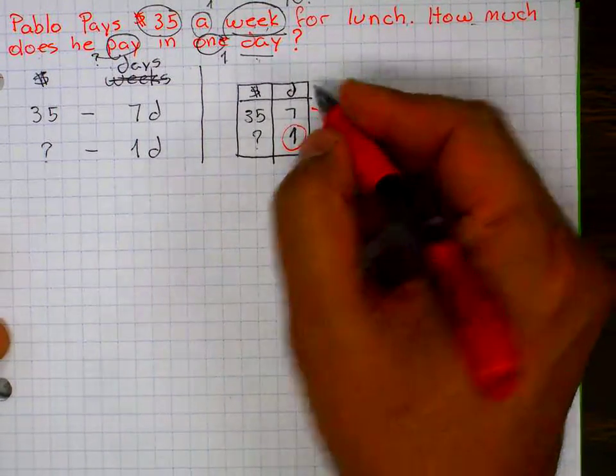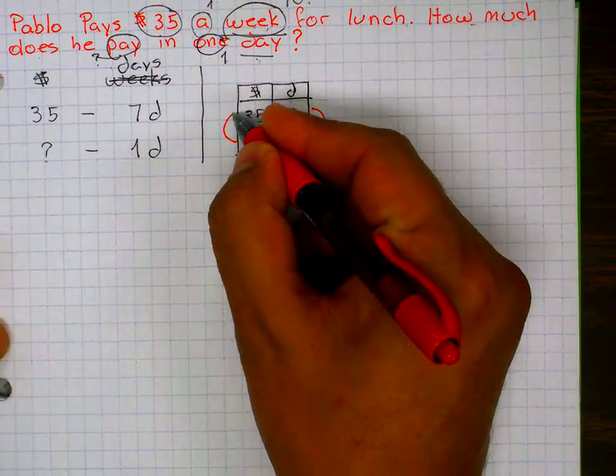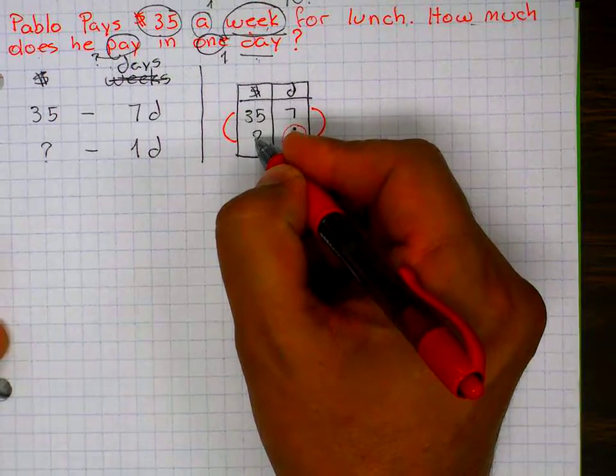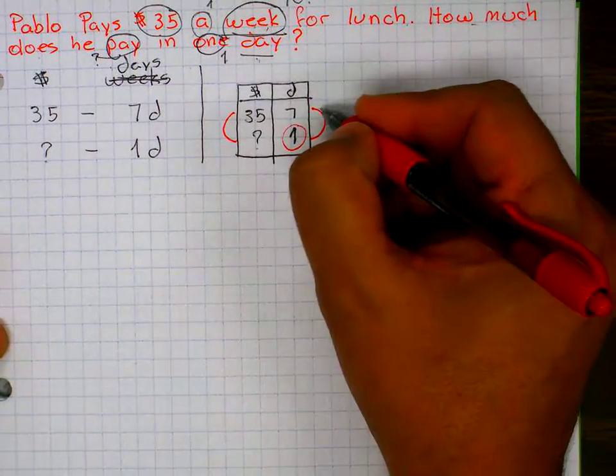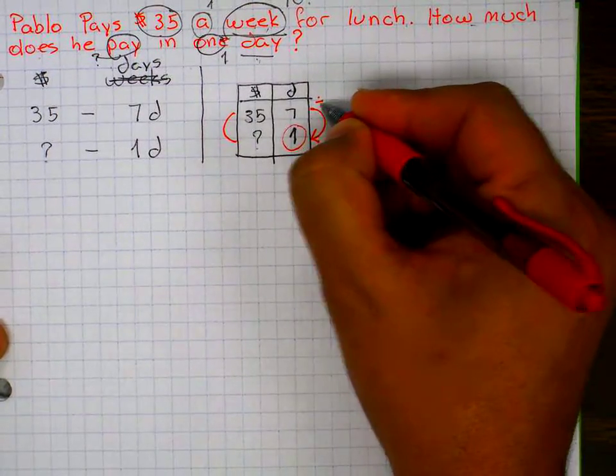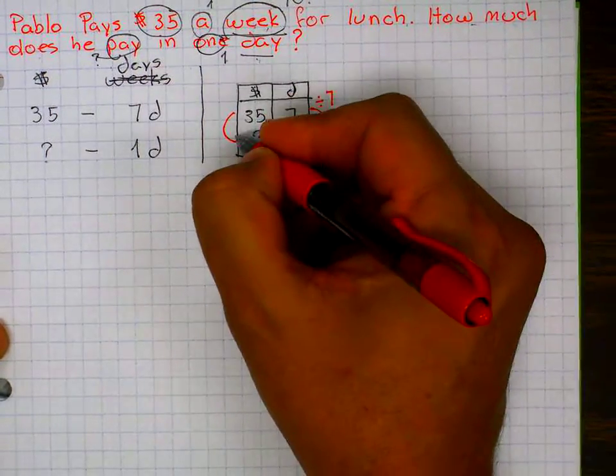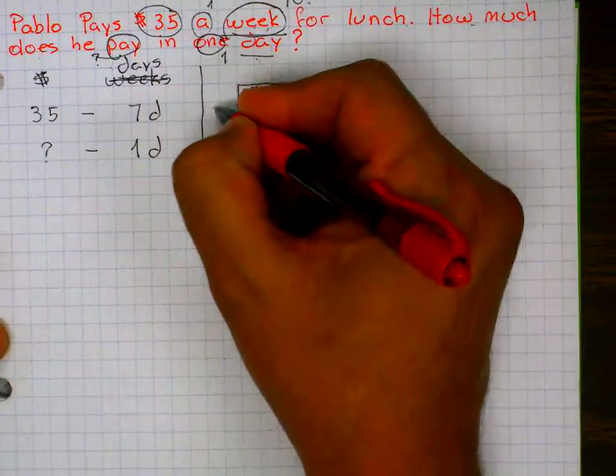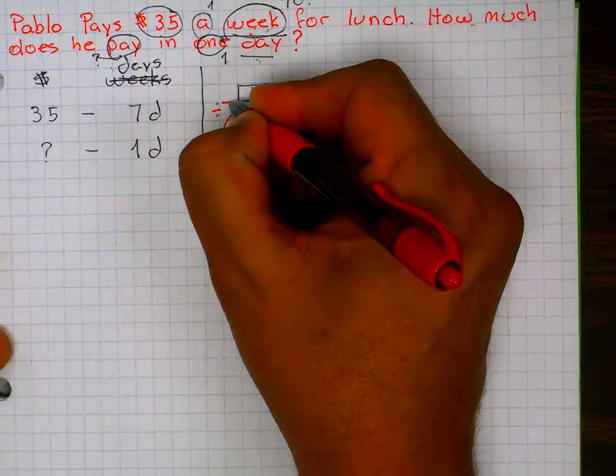Well, can I do the same thing with this? No, because I don't know that number. So I can't multiply. How do I go from seven back down to one? Division. Divide seven divided by seven is one. So what do I do with 35? I have to divide it by seven.